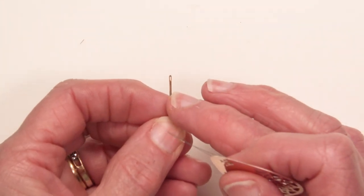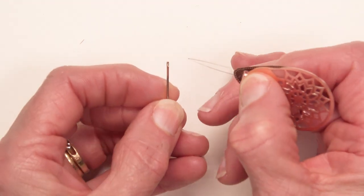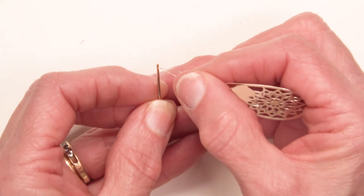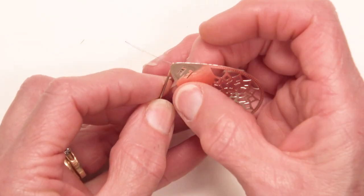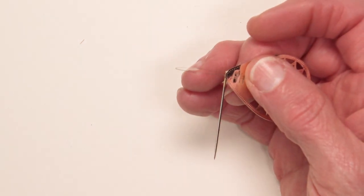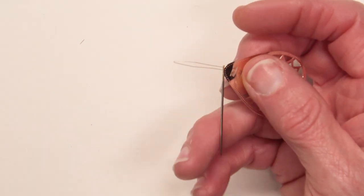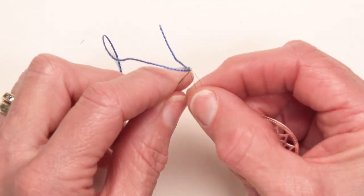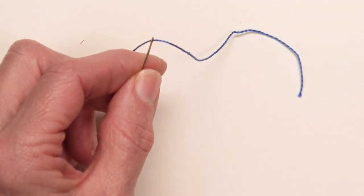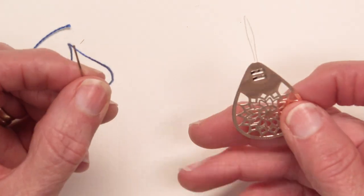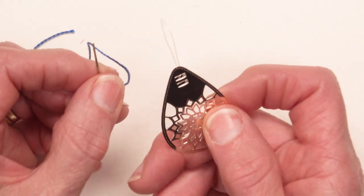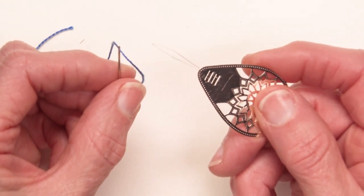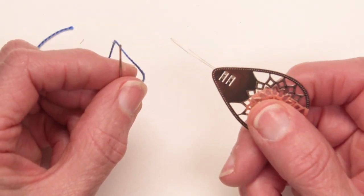This is one of the Sashiko needles with a smaller eye than the one I just did. And you have to get the wire through. And when I first put the wire through, I thought that's not going to work with the number 8 pearl cotton. But it does. Works really well. So when you pair this threader with the right needle and thread combination, it is very handy.